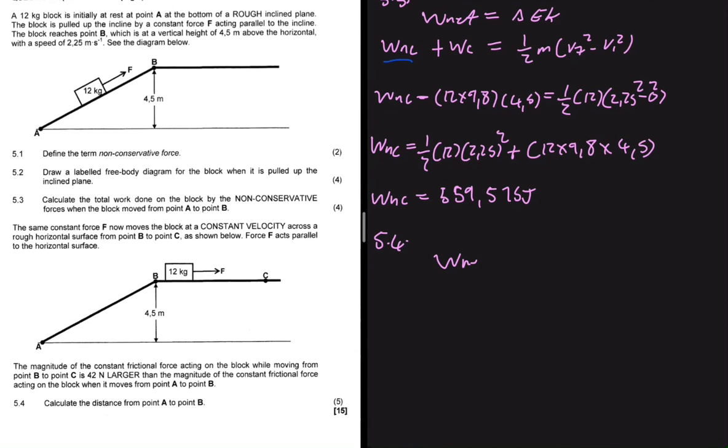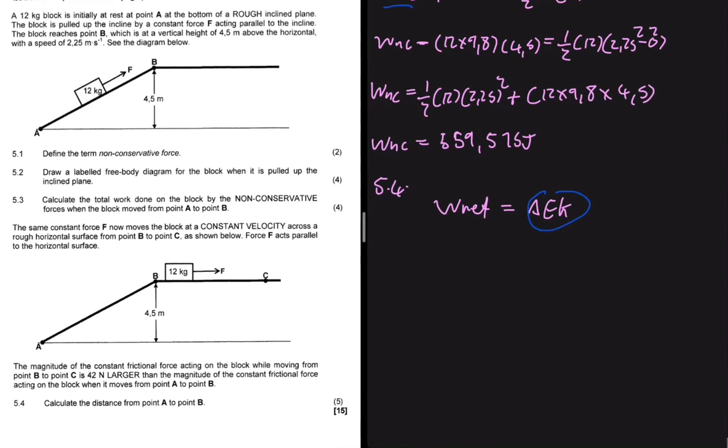We know that work net equals the change in EK, but we know that the change in EK is supposed to be equals to zero because it is moving at a constant velocity. So here the work net is going to be the work done by the force applied plus the work done by the friction, which is equals to zero. But then we can go ahead and solve this. If we do that, we're gonna get force applied minus the frictional force, multiplied by the distance they're traveling. What is the distance traveling? It is BC. Multiplied by BC being equals to zero.